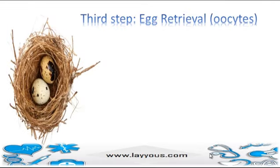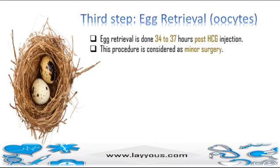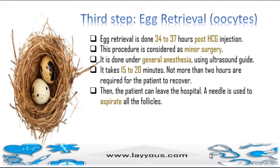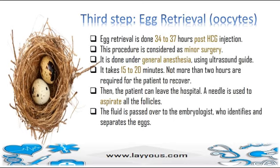Third step: egg retrieval. Egg retrieval is done 34 to 37 hours post-HCG injection. This procedure is considered minor surgery, done under general anesthesia using ultrasound guidance. It takes 15 to 20 minutes, and not more than 2 hours are required for the patient to recover before leaving the hospital. A needle is used to aspirate all the follicles, and the fluid is passed to the embryologist who identifies and separates the eggs. Note that up to 20–30% of follicles seen by ultrasound may be empty.